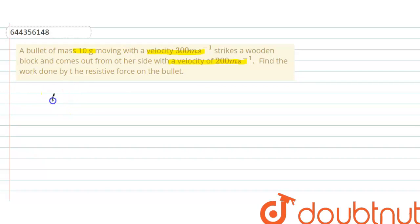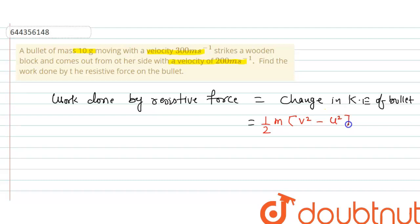So we can write work done by resistive force equals change in kinetic energy of bullet. Change in kinetic energy equals final kinetic energy minus initial kinetic energy. So half m into final velocity v square minus initial velocity u square.